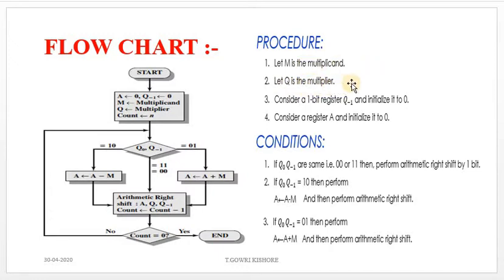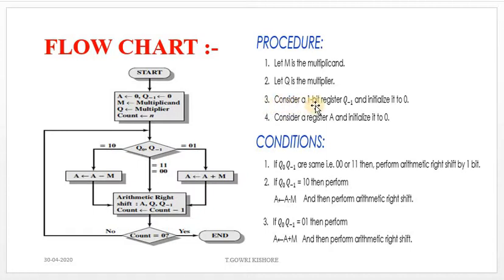What is a Multiplicand and what is a Multiplier? For example, in 2 × 3, 2 is called the Multiplicand and 3 is called the Multiplier. We also consider a 1-bit register represented as Q minus 1, and initialize it to 0.